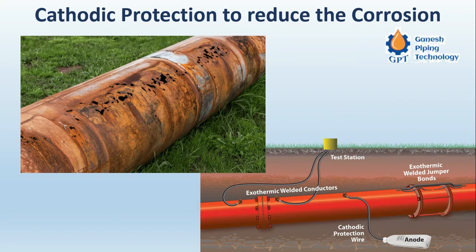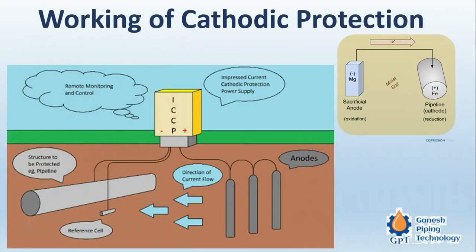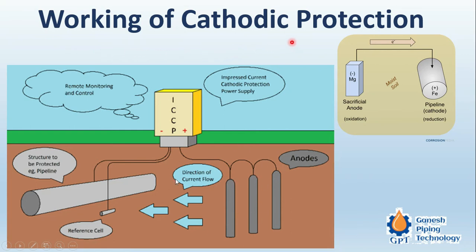Due to this anode-cathode effect, corrosion takes place. This is the phenomenon, and the solution to this is cathodic protection. To understand cathodic protection, let me give a very interesting example using what is called a sacrificial anode, alongside the pipe which we desire to protect.